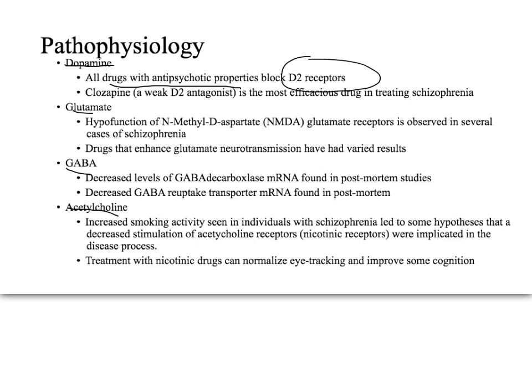Clozapine is a very weak D2 antagonist and yet is the best drug for treating schizophrenia. This is important because being only a weak D2 antagonist suggests it may be doing other things — possibly identifying and blocking a specific subtype of D2 receptors. Exactly how it outperforms other D2 antagonists is not fully known.